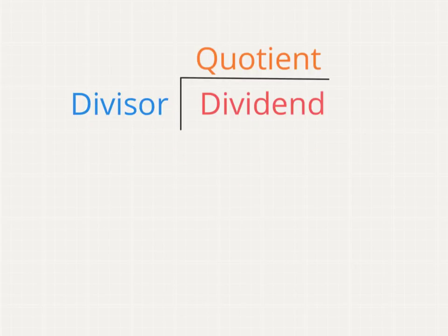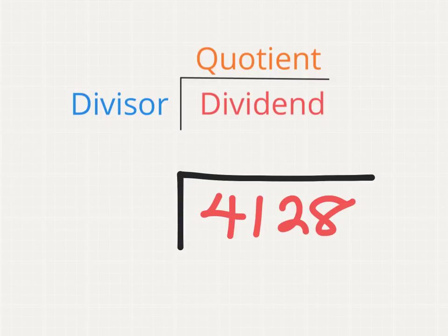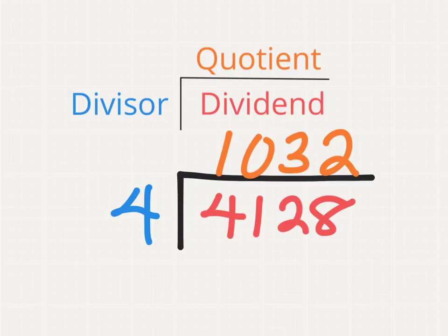In a long division problem, there are three critical parts. The number being divided, say 4,128, is called the dividend, and it is inside the house. The number doing the dividing, say the number 4, is known as the divisor, and it sits outside the house. And finally, the solution to our division problem is known as the quotient, and in this case, that would be 1,032. The dividend, divisor, and quotient are the three critical parts of a long division problem.